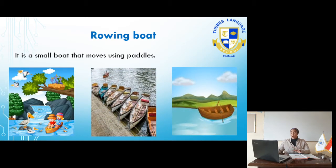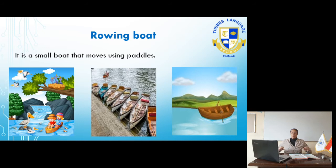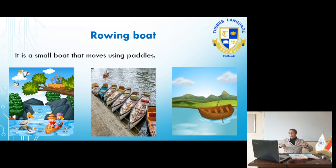We have here the rowing boat. It's a small boat that moves using paddles. As you can see here from the picture, it has two paddles and it's used for paddling in a small river or stream.